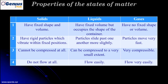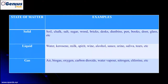For gases, the particles are moving very fast and are always in random movement. Gases are very compressible and they flow very easily because the particles are free to move. Here we have some examples of everyday life materials and substances classified under the three states of matter we have already described.